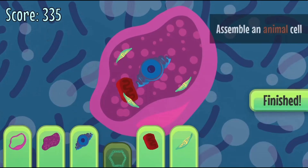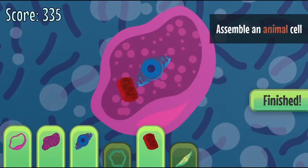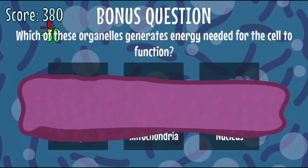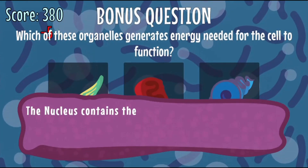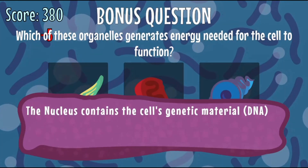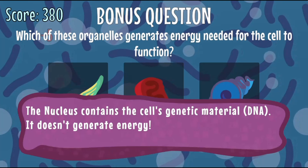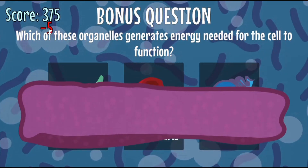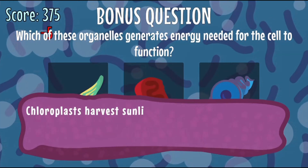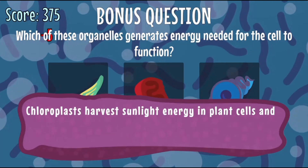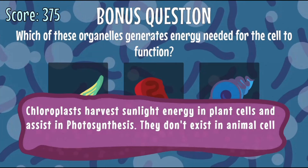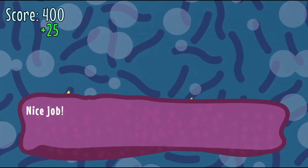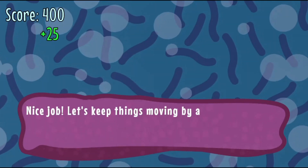Use the mouse to click on different parts of the cell to create plant and animal cells with different parts. Learn more about each part of the cell when constructing the correct plant and animal cells to progress to the next level. Complete all the levels to win the game.